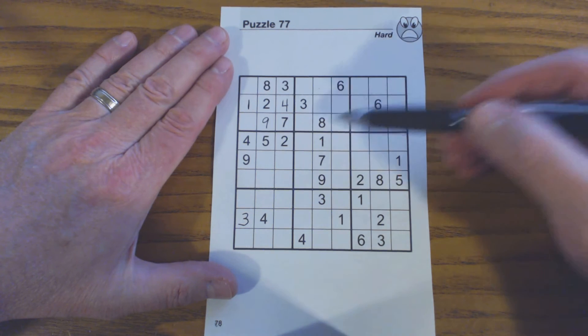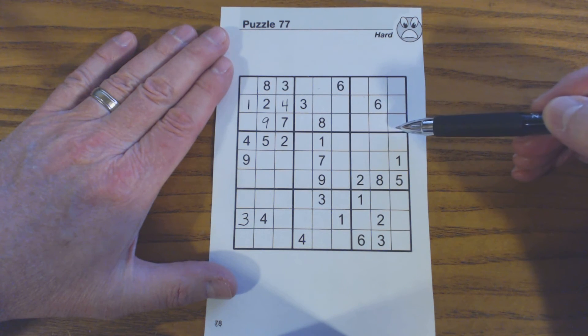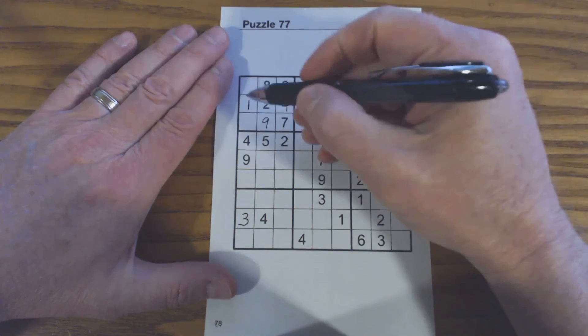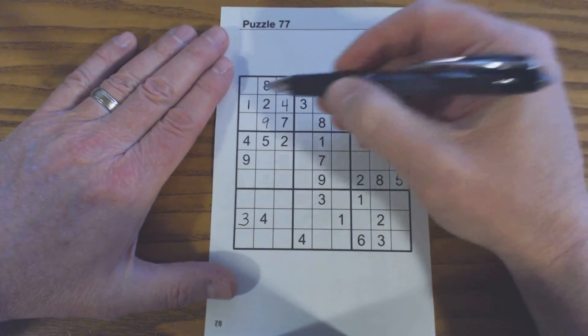And because row one and row three are covered on these two squares, we have done what we call double row elimination and eliminated row one and row three, and therefore row two is the only place that one can fit in this square.